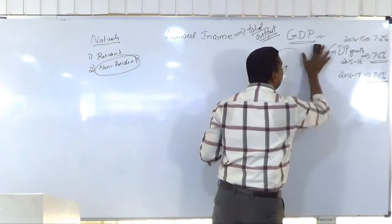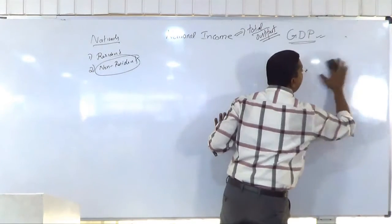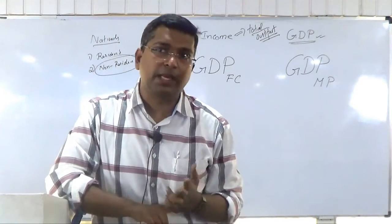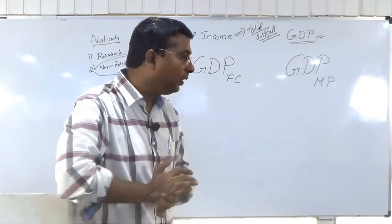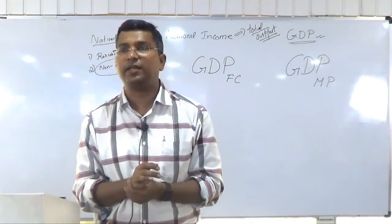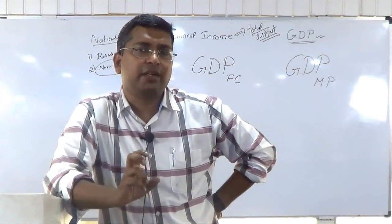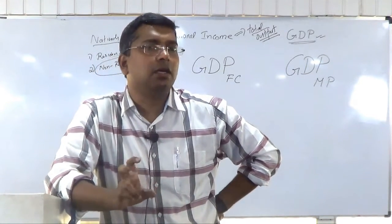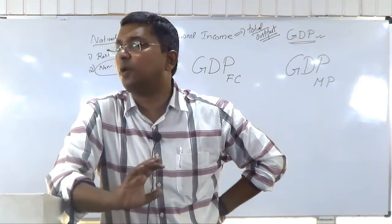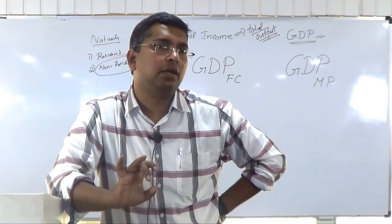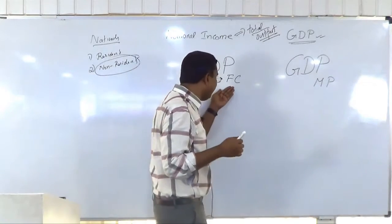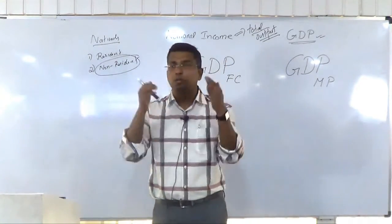We'll discuss two terms: GDP at market price and GDP at factor cost. The factor cost means the actual cost incurred for the factors of production — what you pay for land, labor, capital, and entrepreneur. Now in GDP at factor cost or GDP at market price, you need to understand the distinction clearly.